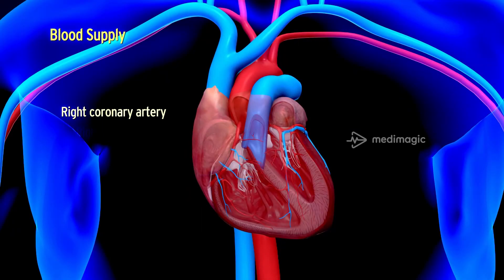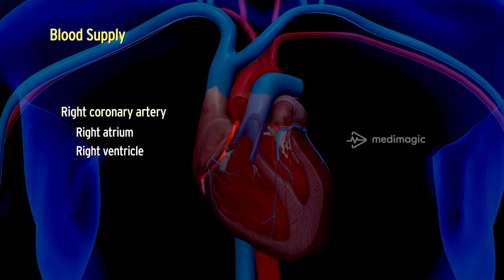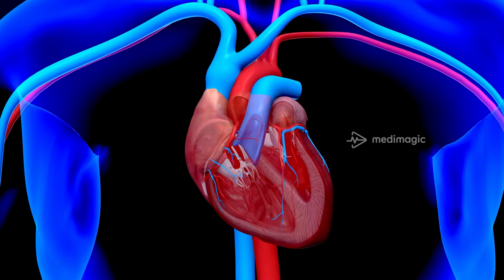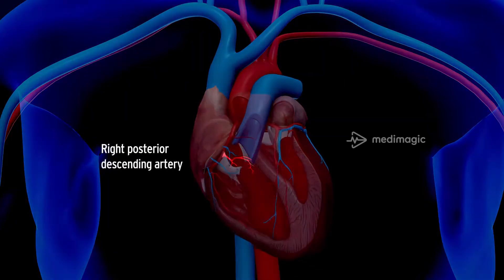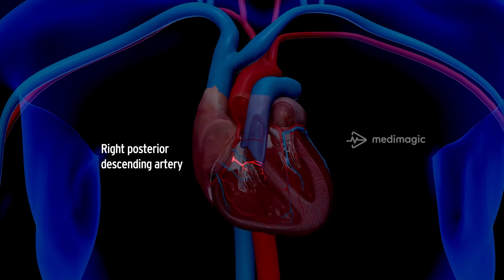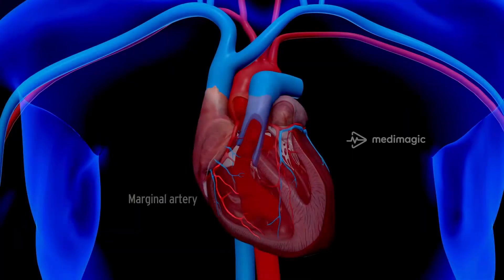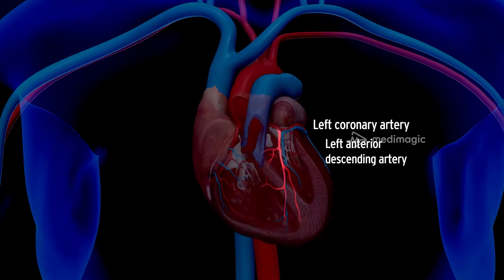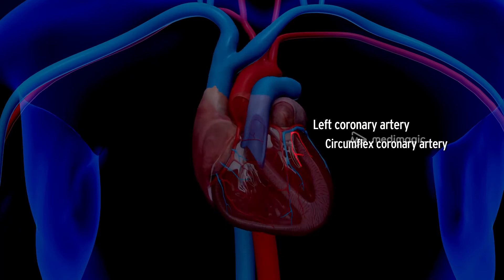The right coronary artery sends branches to the right atrium, the right ventricle, the posterior part of the interventricular septum, and more. This right coronary artery divides into the right posterior descending artery and the acute marginal artery.